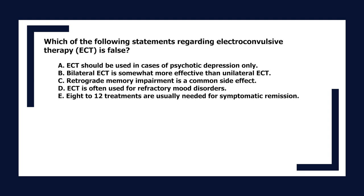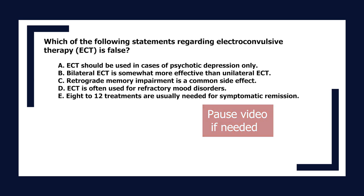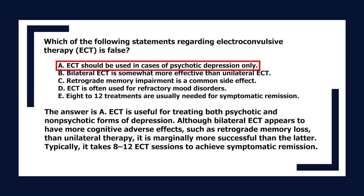Which statement regarding electroconvulsive therapy (ECT) is false? A. ECT should be used in cases of psychotic depression only. B. Bilateral ECT is somewhat more effective than unilateral ECT. C. Retrograde memory impairment is a common side effect. D. ECT is often used for refractory mood disorders. E. 8–12 treatments are usually needed for symptomatic remission. The answer is A. ECT is useful for treating both psychotic and non-psychotic forms of depression. Bilateral ECT has more cognitive adverse effects but is marginally more effective. Typically 8–12 sessions achieve symptomatic remission.